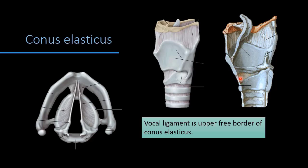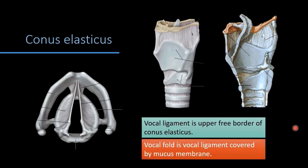The cricothyroid membrane is the extrinsic membrane; inside it, the conus elasticus runs. In the midline anteriorly, the cricothyroid ligament is the thickened part of the cricothyroid membrane. Being elastic, whenever the lamina of the cricoid goes back, it gives tension in the folds; when the lamina moves forward with the arytenoid, it gives relaxation. The vocal fold is the vocal ligament covered by mucous membrane.